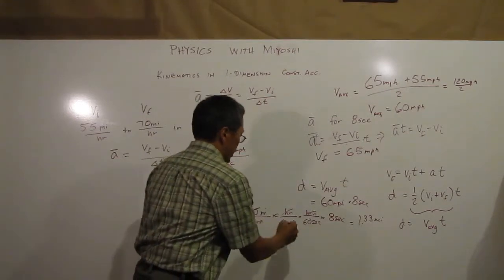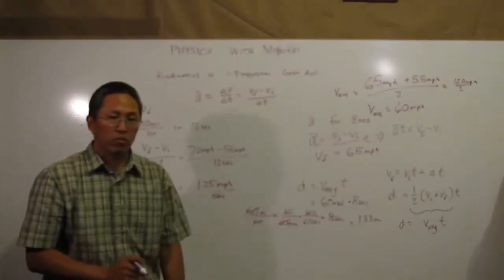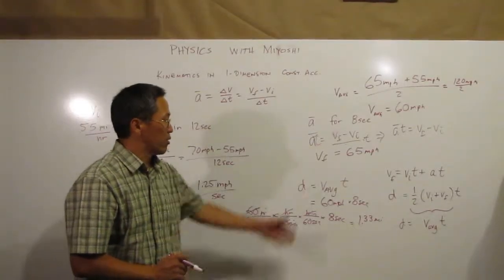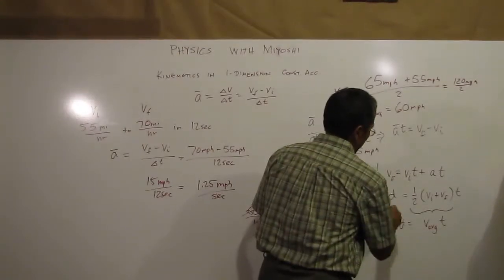When I multiply and divide all this out, the 60 goes away to, well it divides out to 1, and so I have 8 over 60, which gives me 1.33 miles.